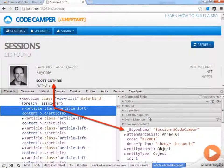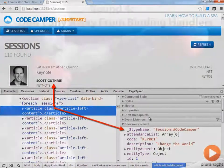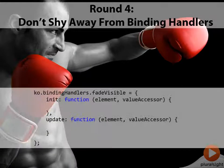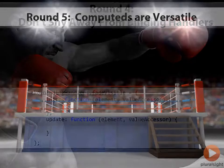Not only looking at the JavaScript but also looking at the declarative HTML and finding out what's bound to our objects. Knockout has some really powerful tools like binding handlers. So in round four we're going to take a deep look at binding handlers and a couple different scenarios where they really come in handy.